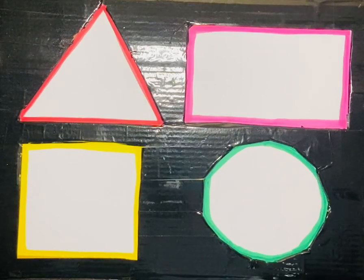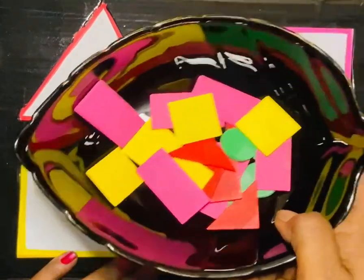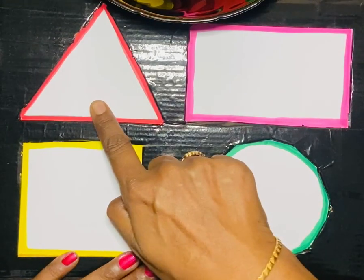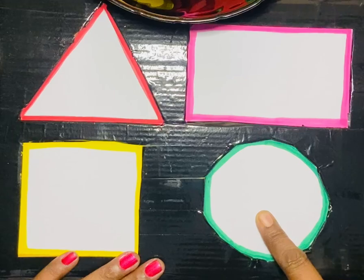Welcome to Math Talk 23. Today we are going to do an activity on 2D shapes. Triangle, Rectangle, Square and Circle.